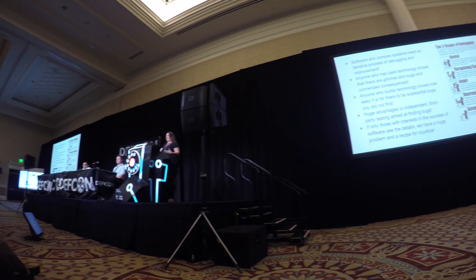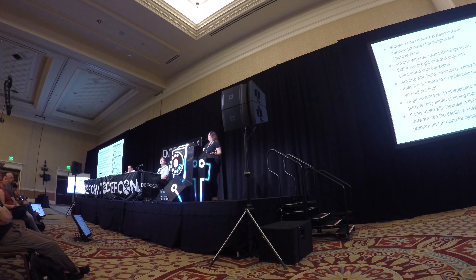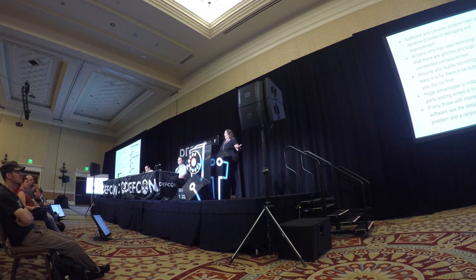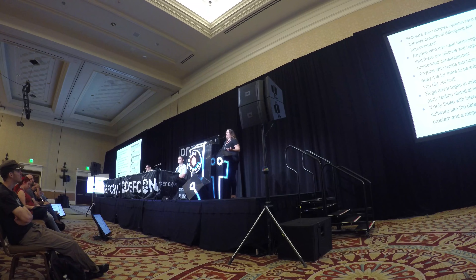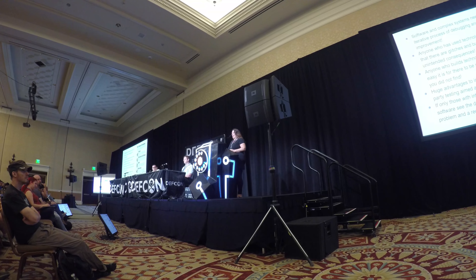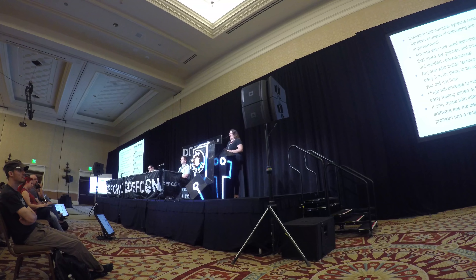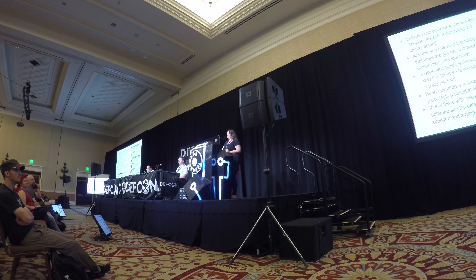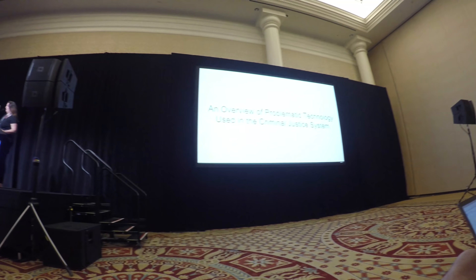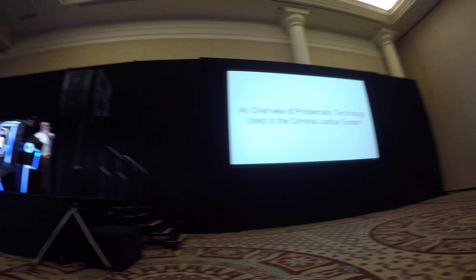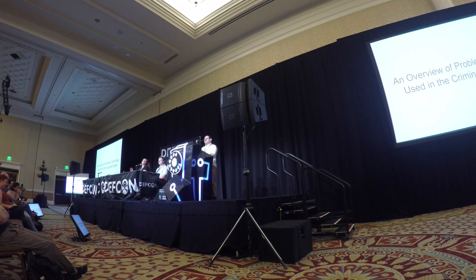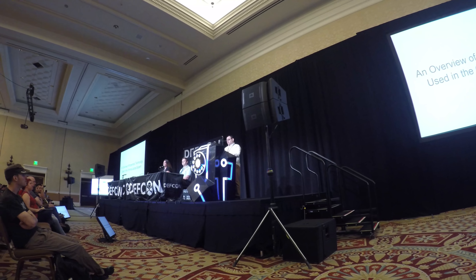For those of us who build technology and software, we know that software and complex systems need an iterative process of debugging and improvement. Anyone who uses technology, let alone builds it, knows that there are glitches and bugs and unintended consequences. There's a huge advantage to independent third-party testing — you need teams that are incentivized to find problems rather than teams with a vested interest in showing the system is working just fine. We're dealing with a system that actively de-incentivizes that, and if only those with interest in the success of software see the details, we have a huge recipe for injustice.